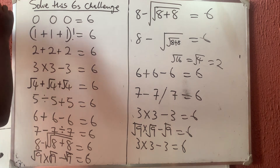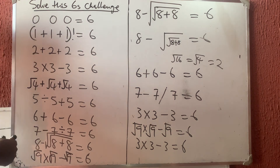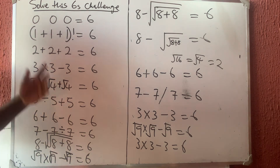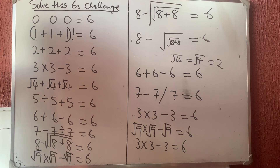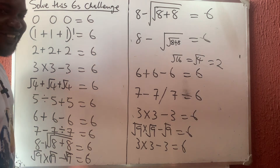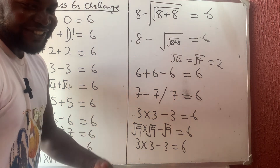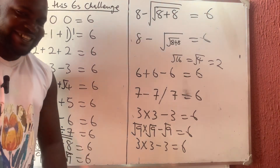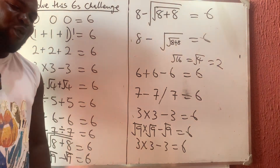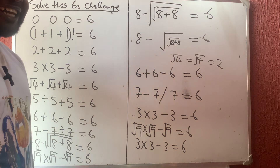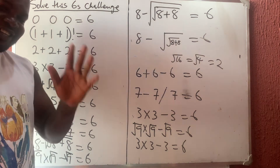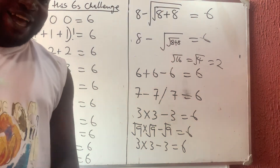So for eight, eight, eight: I use plus inside a nested square root, then minus. For zero, zero, zero — tell me what you think in the comment section. We love you, bye!